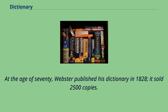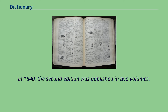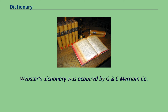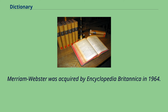At the age of 70, Webster published his dictionary in 1828; it sold 2,500 copies. In 1840, the second edition was published in two volumes. Webster's Dictionary was acquired by G. and C. Merriam Company in 1843, after his death, and has since been published in many revised editions.